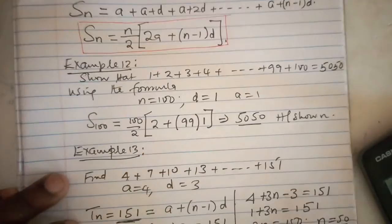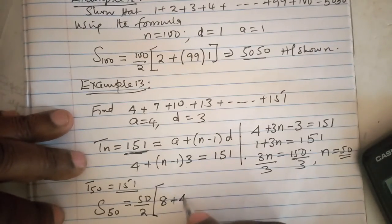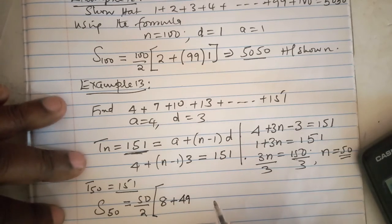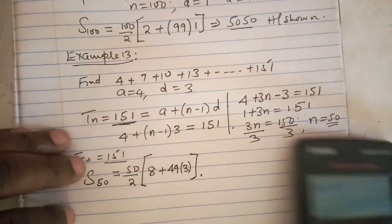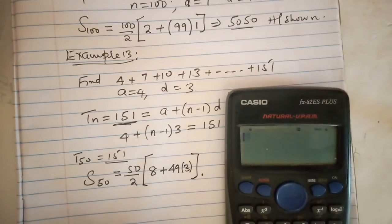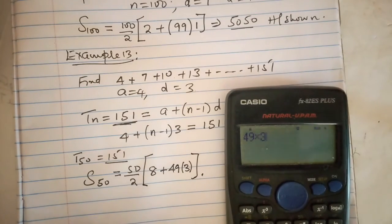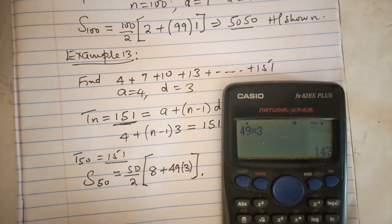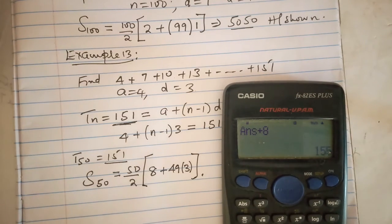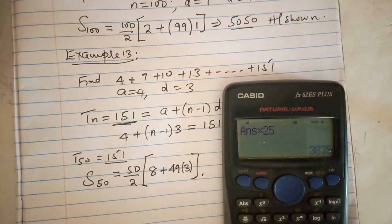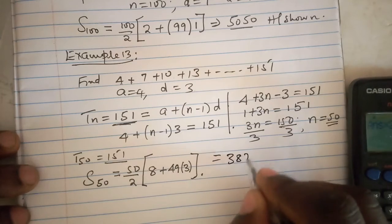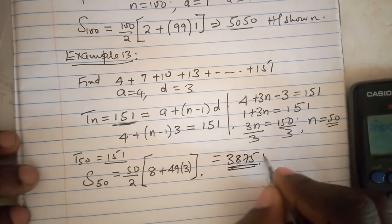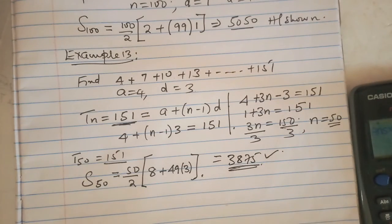n is 50, 50 minus 1 is 49. 49 times 3, that is 147, plus 8 you get 155, times 25 you get 3875. This is going to be 3875, and that is exactly what you are supposed to show. This is what you are supposed to achieve.